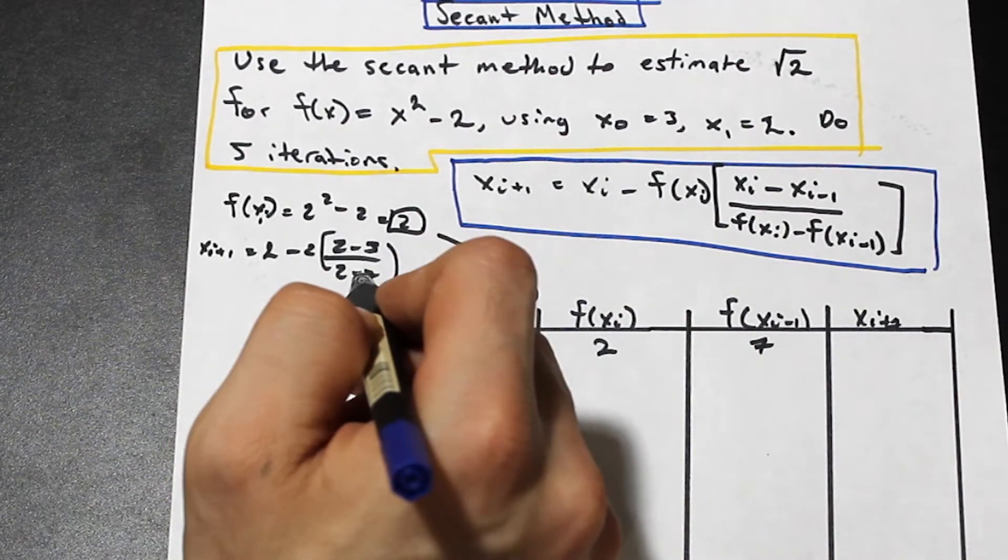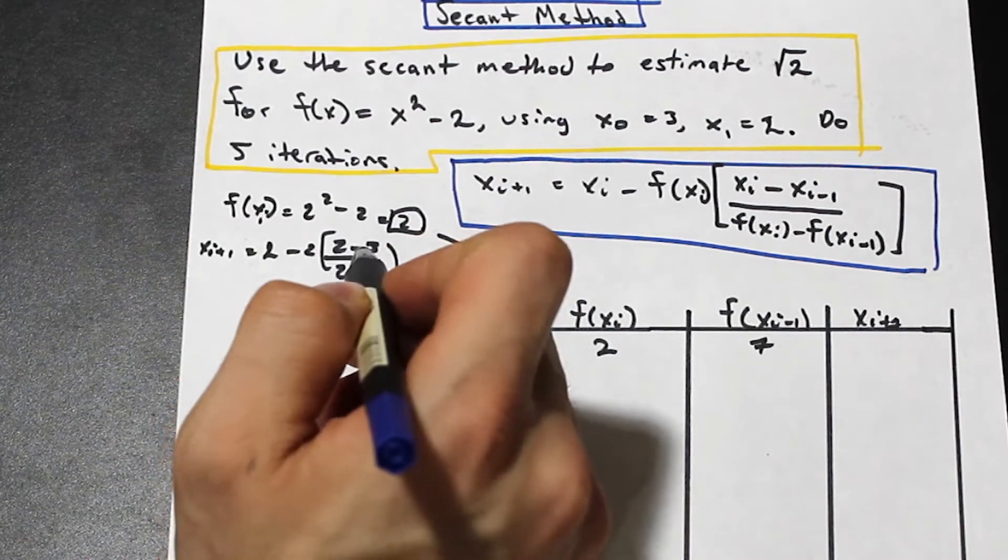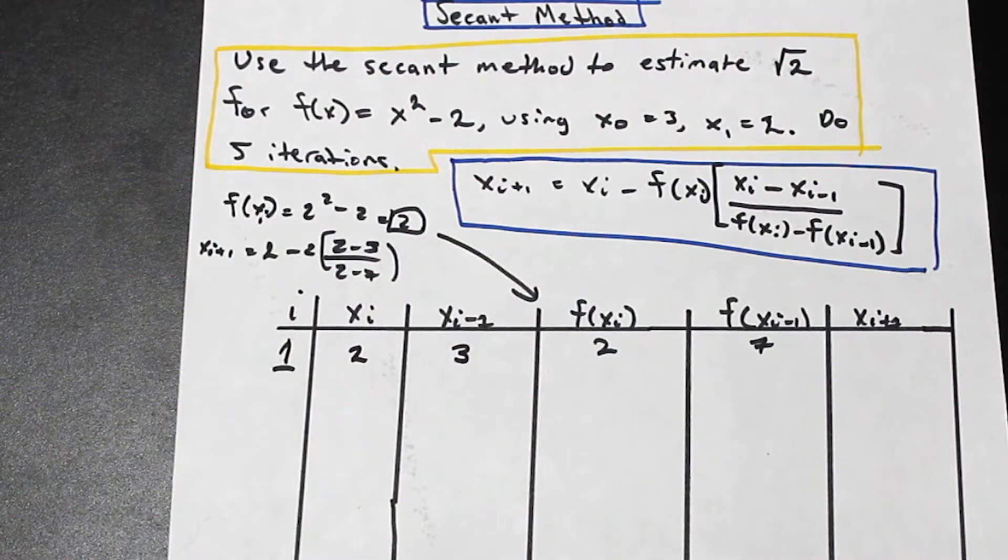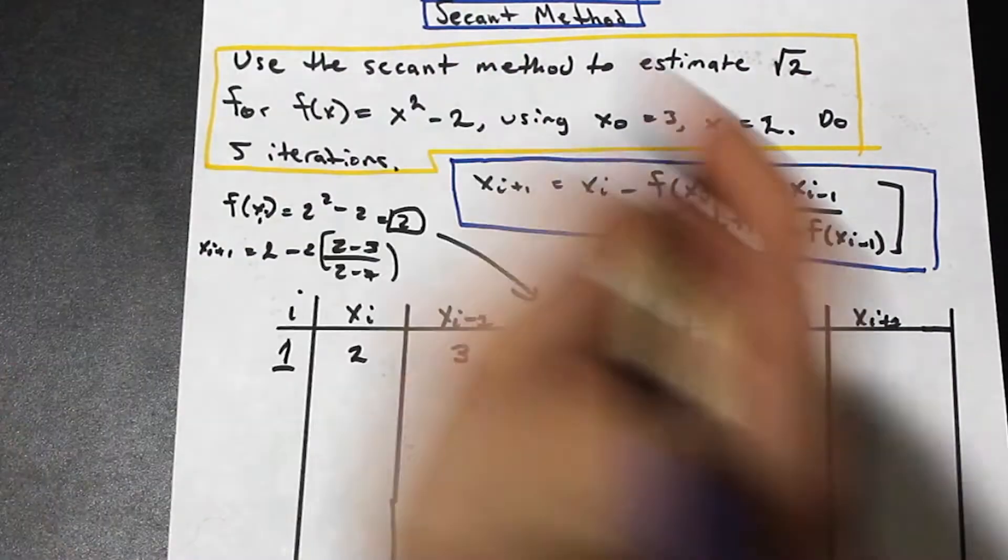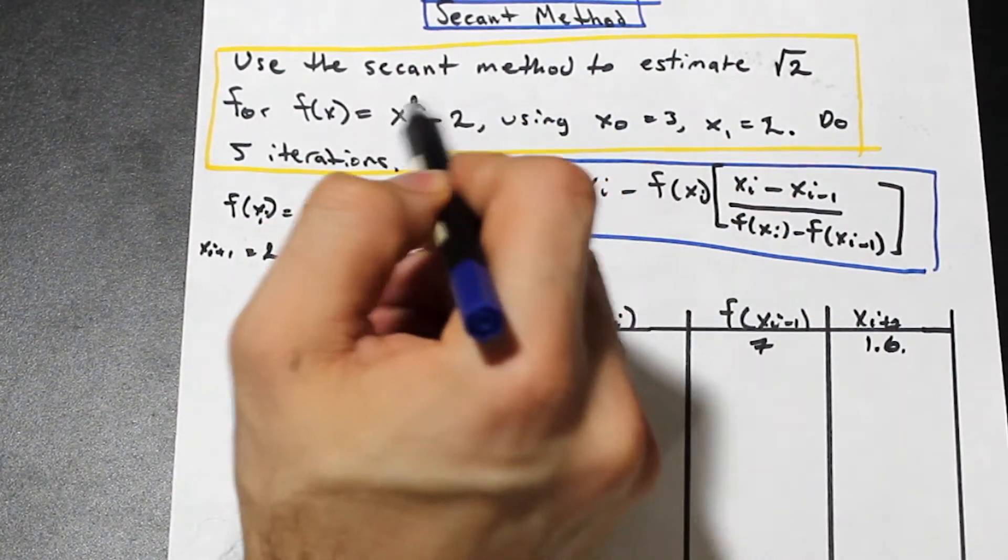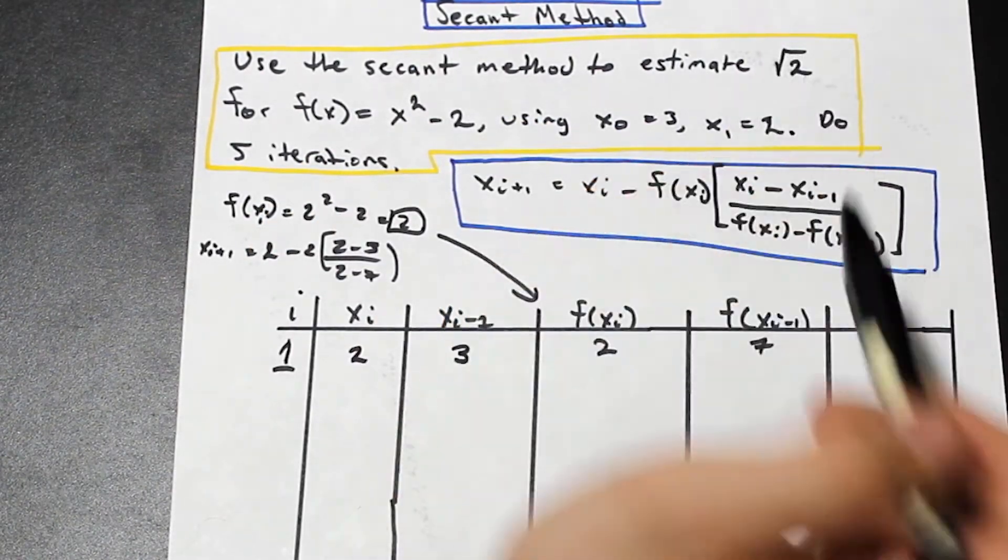And then we have negative 1 over 5, so that's 1 over 5, times 2, that's going to be negative 2 over 5. 2 over 5 plus 2 is going to give us, and you just put that in your calculator, you're going to get 1.6. So that is the first guess using this function here to estimate the value of root 2.